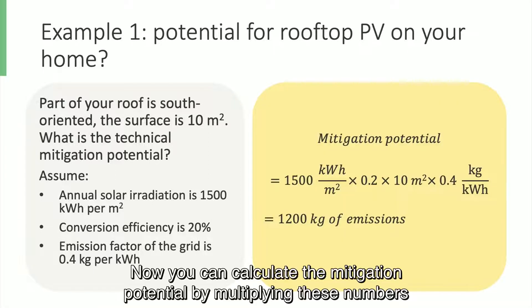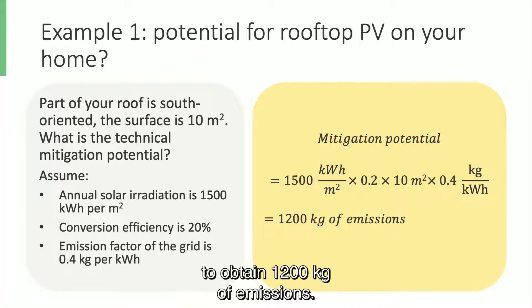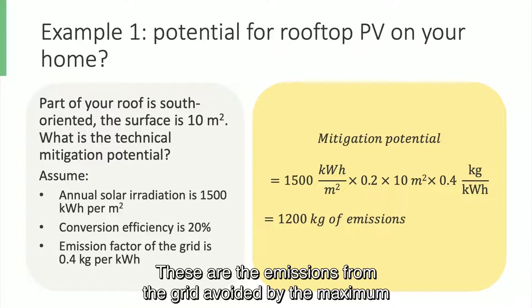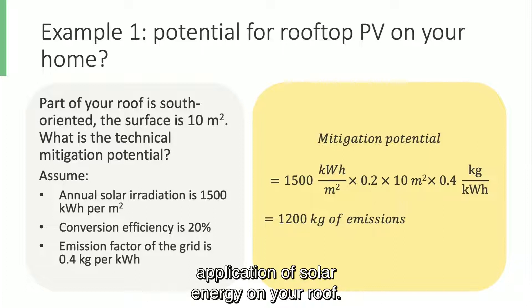You can calculate the mitigation potential by multiplying these numbers to obtain 1200 kg of emissions. These are the emissions from the grid avoided by the maximum application of solar energy on your roof.